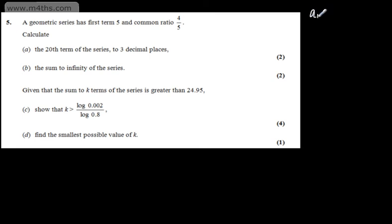We can use the formula book: a sub n equals a r to the n minus 1. So the 20th term, a sub 20, is going to be the first term, which is 5, multiplied by the common ratio, which is 4 fifths, to the power of 20 minus 1, which is 19.